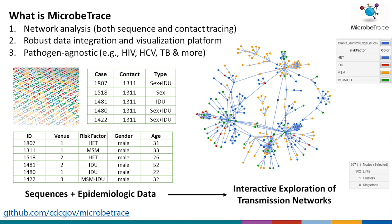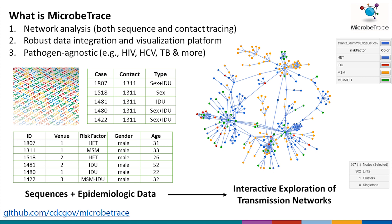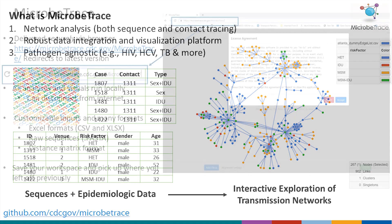This is the most common type of data we work with in public health, but in addition to that we also collect contact tracing data or partner services data collected during an outbreak. This is represented in the format where the case has a contact, and there's some type of contact between them, like sex or sex and injection drug use — so person A is connected to person B by some type of contact.